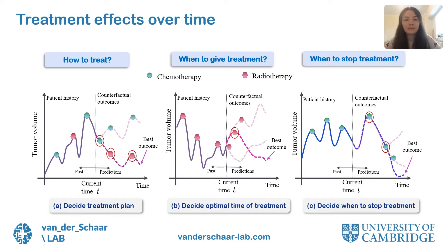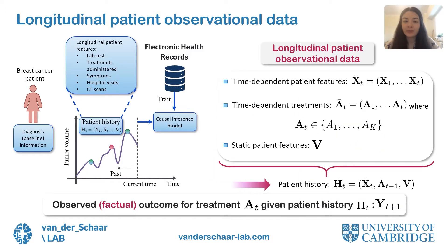These causal estimates of treatment effects over time can be used to determine when is the optimal time to treat a patient, when to stop a treatment plan, and which sequence of treatments to use. Since we want to leverage longitudinal patient observational data from electronic health records, I will first describe in more detail the structure of such data to set out our problem formalism. For each patient, we observe static patient features V, such as diagnostic information.